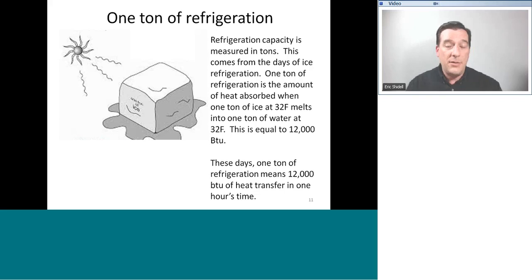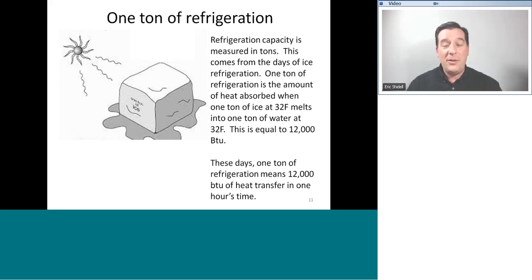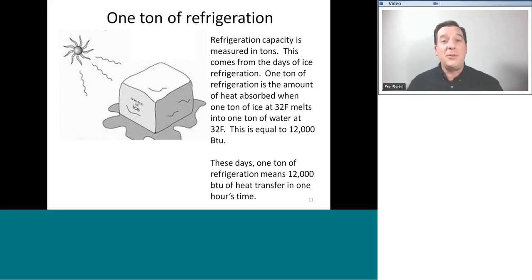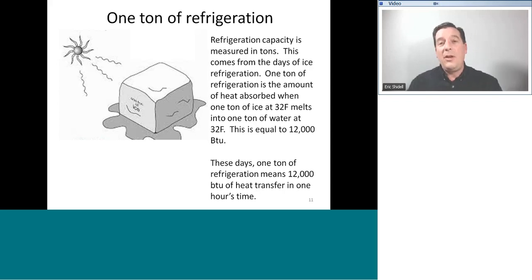When we talk about refrigeration, we talk about tons of refrigeration — a two-ton air conditioner, a five-ton air conditioner, a 20-ton air conditioner. When I first got started in HVAC, I didn't know the difference between a furnace and a water heater. I was talking to my dad one day and said I was servicing a two-ton air conditioner, and he said 'whoa, two tons — that must be a really big one,' thinking two tons meant 4,000 pounds. Refrigeration capacity is measured in tons, but this term comes from the days of ice refrigeration. It refers to the amount of heat energy absorbed by ice as it melts. One ton of refrigeration refers to the specific quantity of heat required to cause one ton of ice at 32 degrees Fahrenheit to completely transform into one ton of water at 32 degrees Fahrenheit.